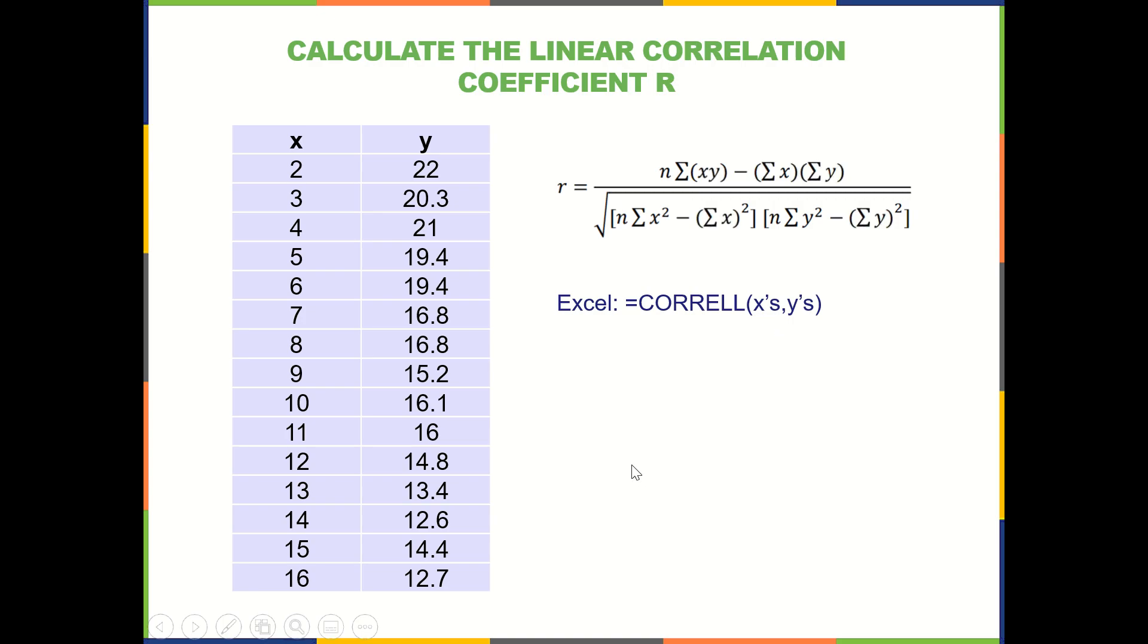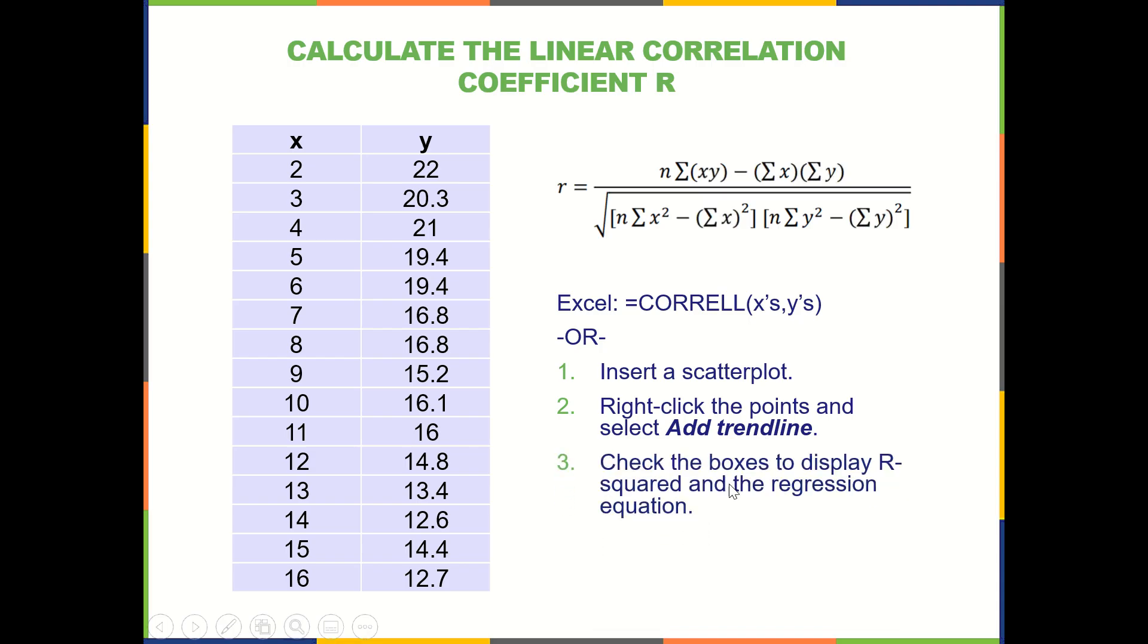Or, and I recommend the second option, insert a scatterplot. That way you can see the pattern of the data. And then just right-click the points and click Add Trend Line. Then check the boxes to display the r-squared and the regression equation. Then all you have to do is take the square root of the r-squared value, and you accomplish a lot of things by doing this.